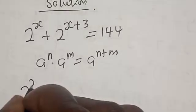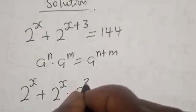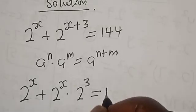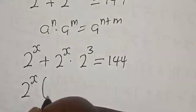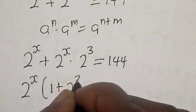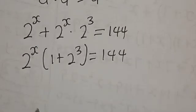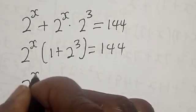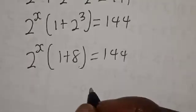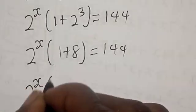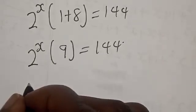Now, 2 raised to power s plus 2 raised to power s multiplied by 2 raised to power 3 is equal to 144. Now 2 raised to power s is common: 2 raised to power s into 1 plus 2 raised to power 3 is equal to 144. So 2 raised to power s into 9 is equal to 144.